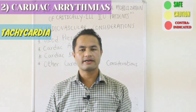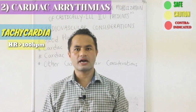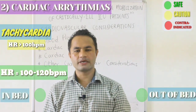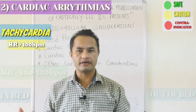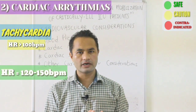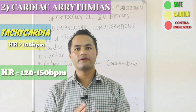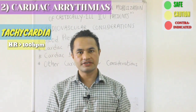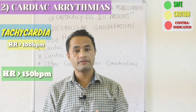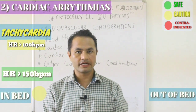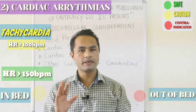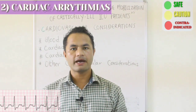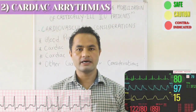Next is stable tachycardia or tachyarrhythmia, meaning heart rate above 100 beats per minute. Patients with a ventricular rate of 100 to 120 beats per minute can be mobilized safely within and out of bed, whereas patients with a ventricular rate of 120 to 150 beats per minute should be mobilized under sufficient medical supervision within the bed and should not be mobilized out of the bed. Physiotherapists can identify ventricular rate by looking at the ECG or the rhythm strip on the monitor.